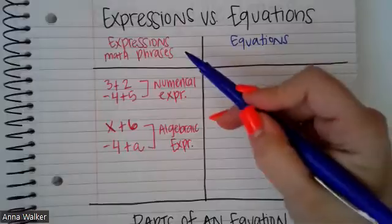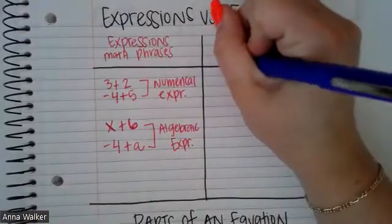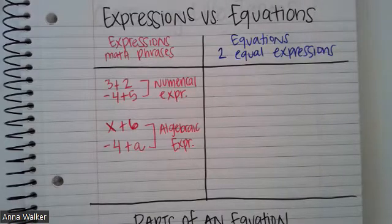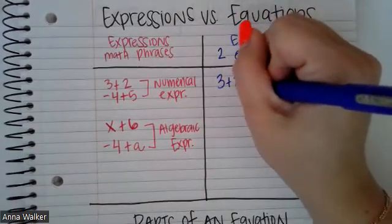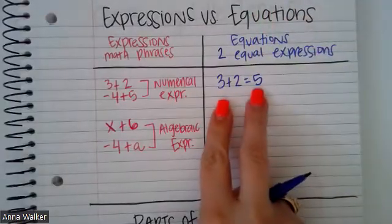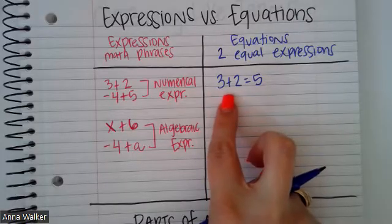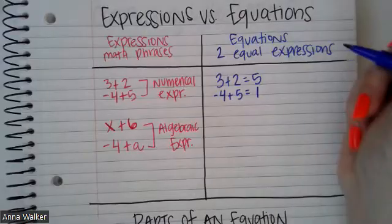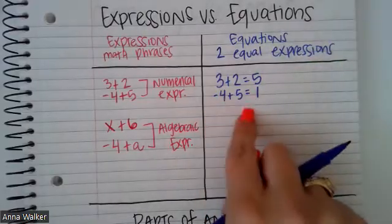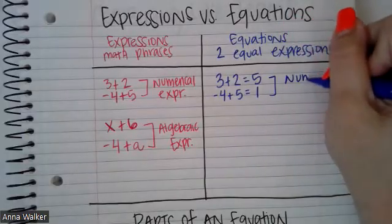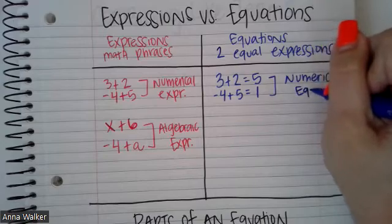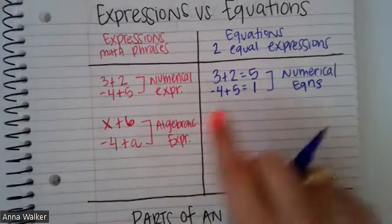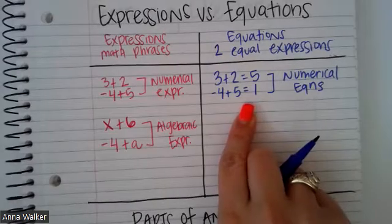The difference between an expression and an equation is that equations show two equal expressions — they show two equal expressions. For example, if I have three plus two is equal to five, I am showing two things that are equal: five is on one side and three plus two, which makes five, is on the other side. Or negative four plus five equals positive one — this is showing two things equal to each other. These are called numerical equations because they only involve numbers.